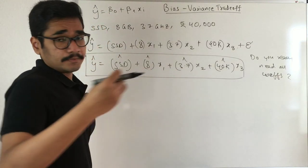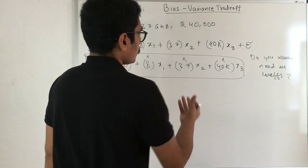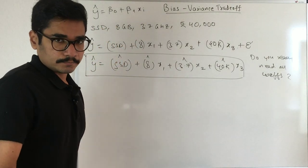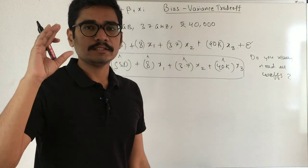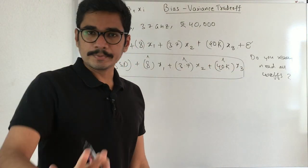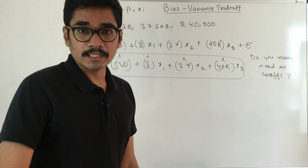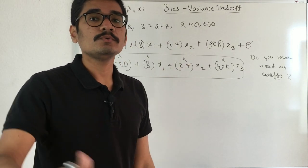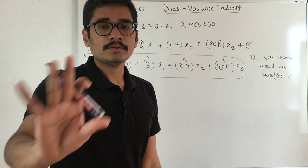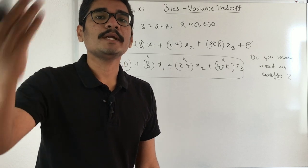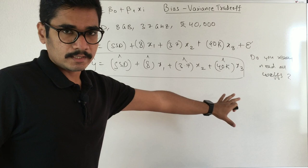But what if I give only 2 predictor variables or only 2 features? Will it predict or not? Ideally, if you give all these parameters, it should predict correctly. But if 2 or 3 parameters are not given, or if you're making use of only 2 or 3 predictor variables, there could be a chance your prediction is wrong.